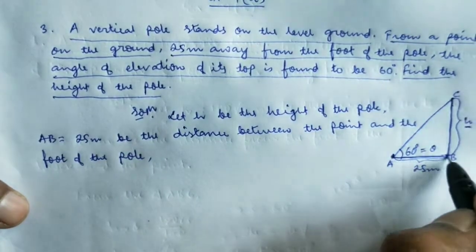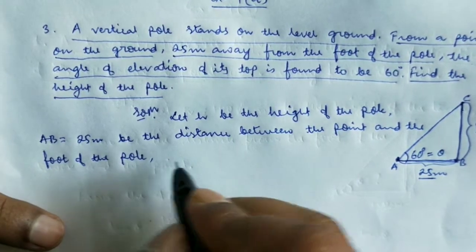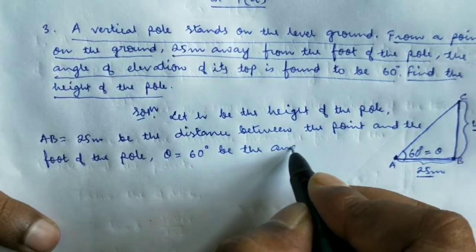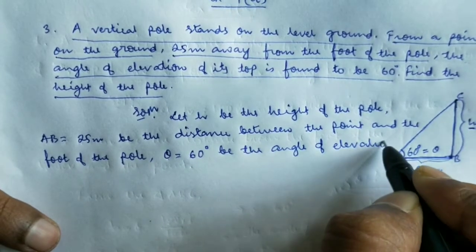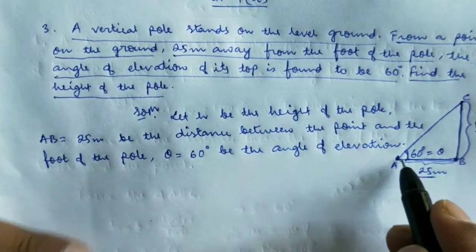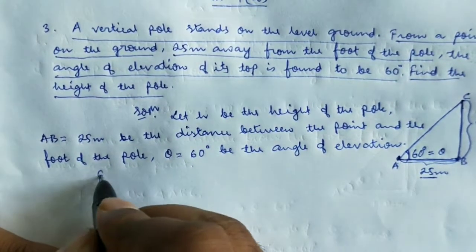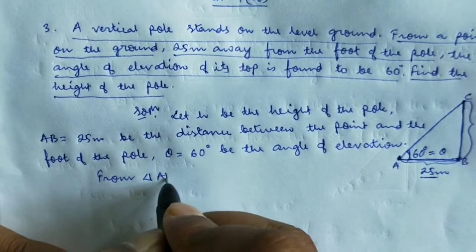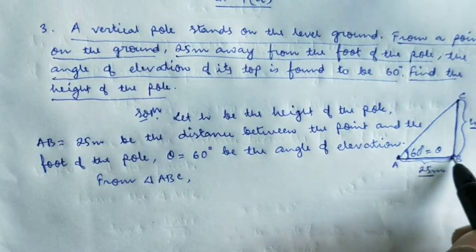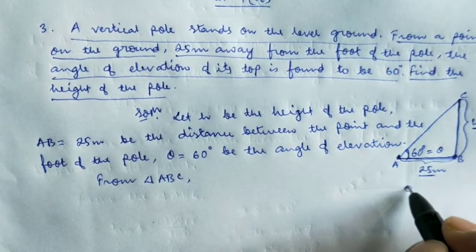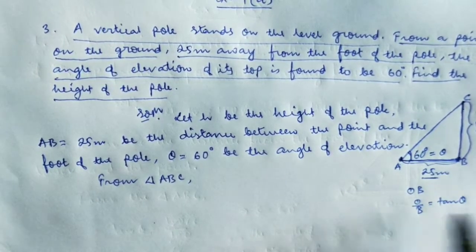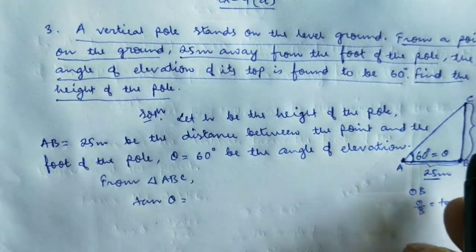From the diagram, H is directly opposite to theta, so H is the opposite side, and AB is the base of the triangle. Since the opposite side and base are known, we compare with trigonometric ratios — tan theta involves the opposite side and the base. So opposite side divided by base equals tan theta.